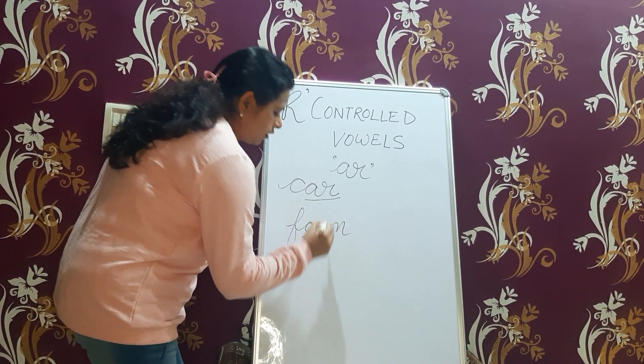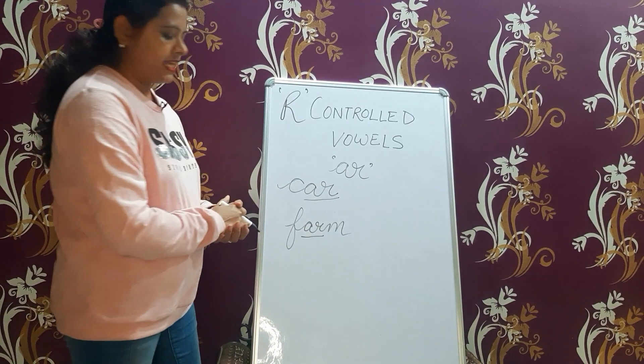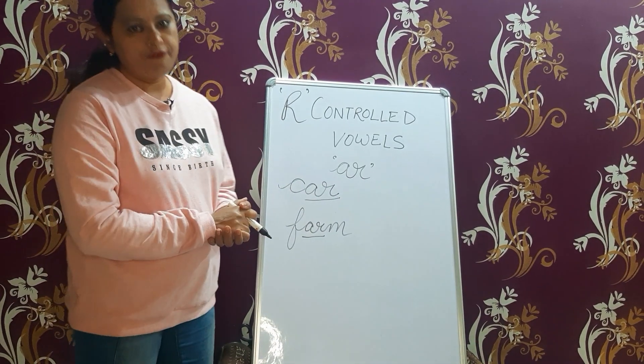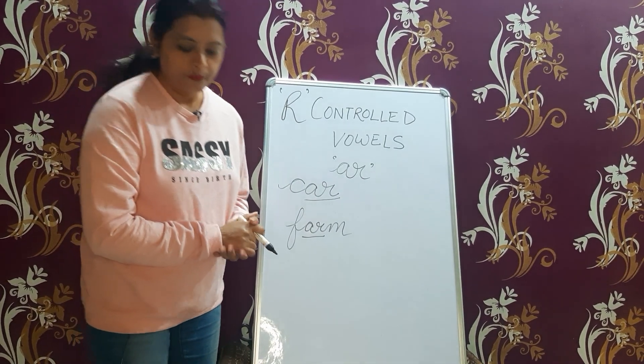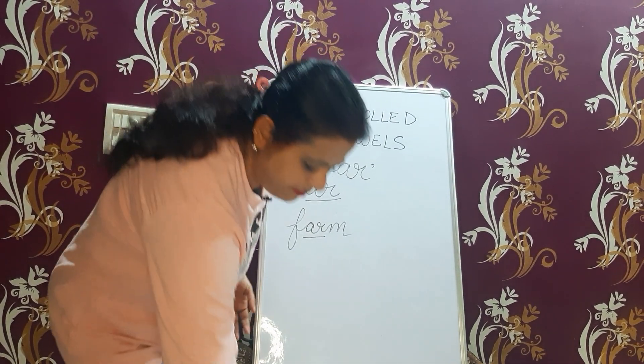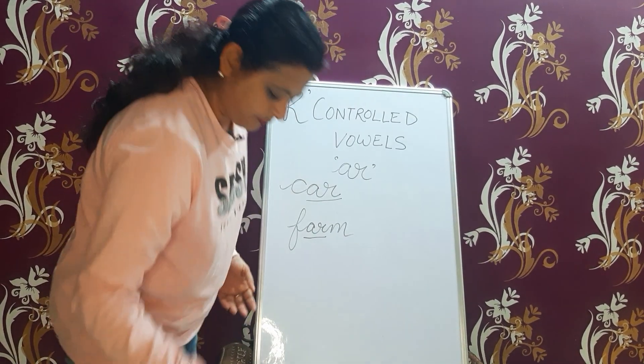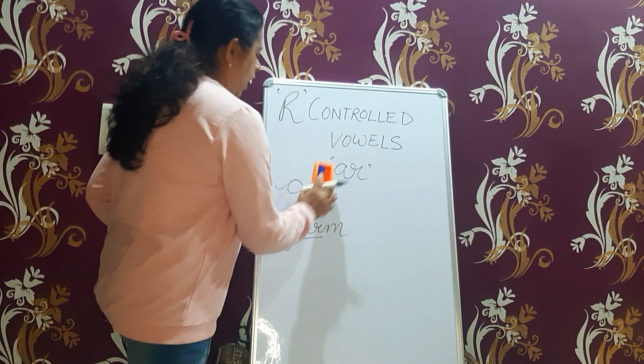A-R is pronounced as in 'farm'. Same as O-R — when R follows the vowel O.